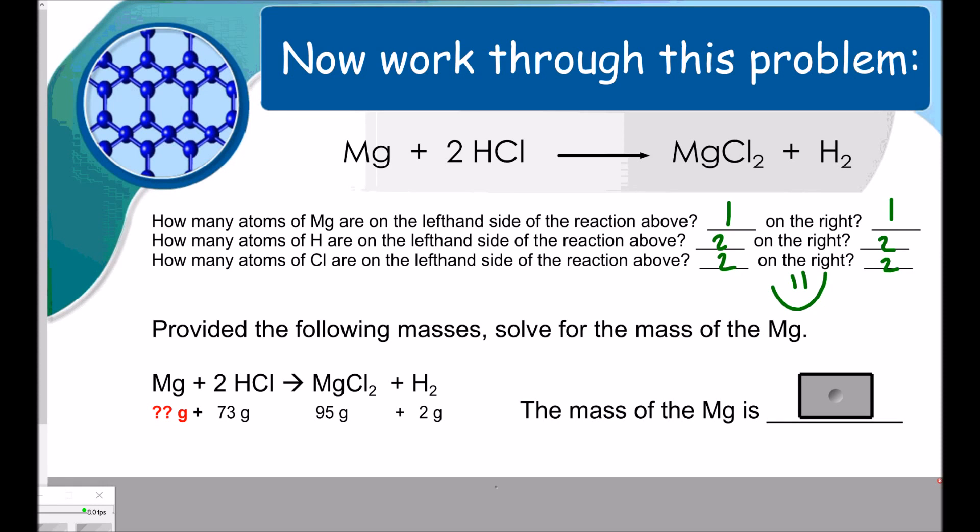Welcome back. So this reaction shows magnesium plus hydrochloric acid reacting to form magnesium chloride and hydrogen. So we're supposed to count the number of atoms in each on the left-hand side and on the right-hand side. I have the answers here for you. Hopefully, you saw that the law of conservation of mass was proven here. It says, provided the following masses, solve for the mass of magnesium. Well, hopefully, you added 95 and 2 and got 97. And so if the product side equals 97, the reactant side also has to equal 97. So what must this equal in order for that to occur? So magnesium must weigh 24 grams in order for the reactant side to equal the product side.